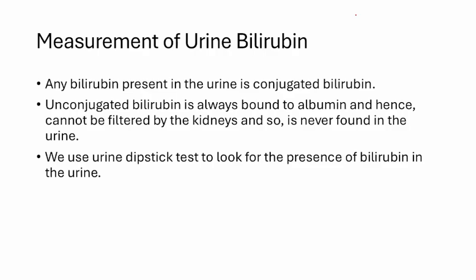Measurement of urine bilirubin is important because any bilirubin present in the urine is always conjugated. Unconjugated bilirubin is water-insoluble and cannot be excreted by the kidneys, so it is never found in the urine. Unconjugated bilirubin is always bound to albumin and cannot be filtered by the kidneys. We use a urine dipstick test to look for the presence of bilirubin in the urine.